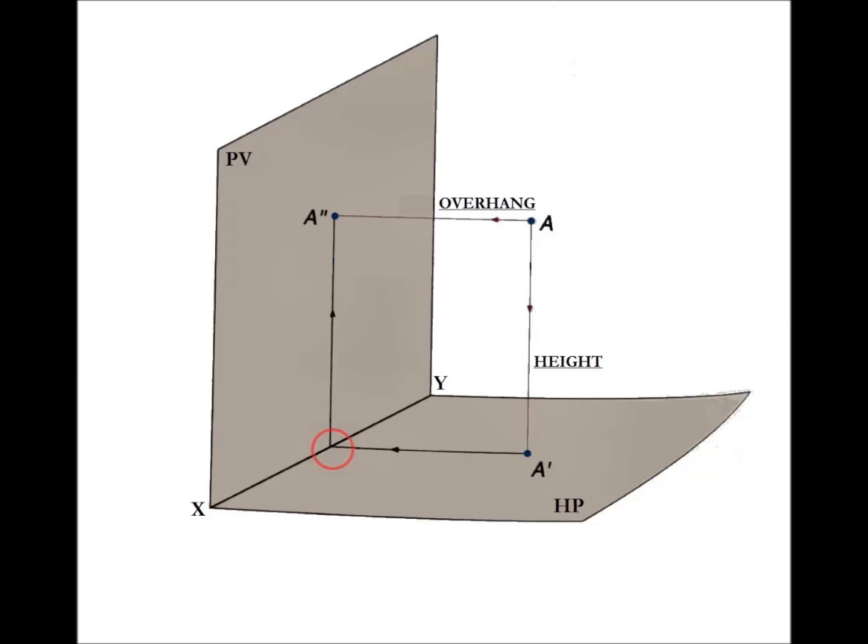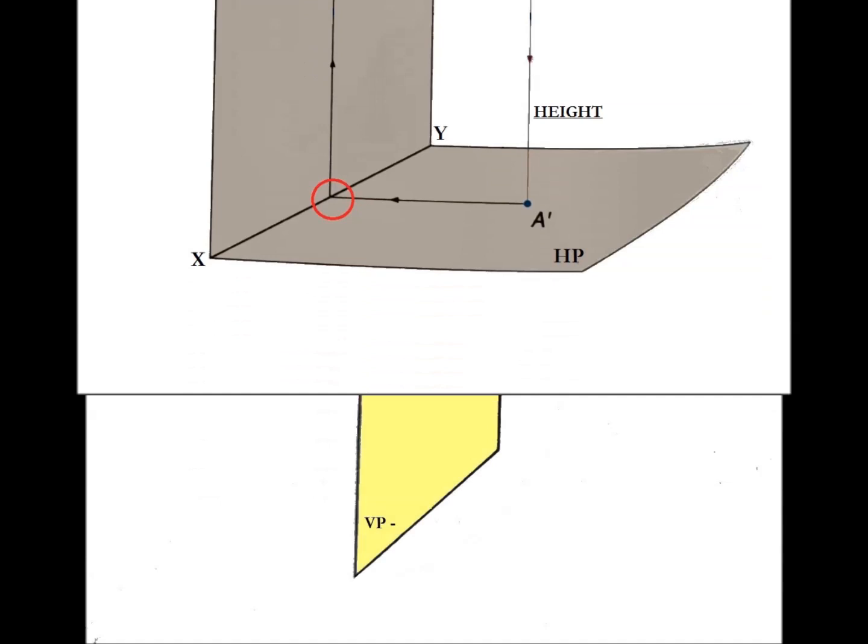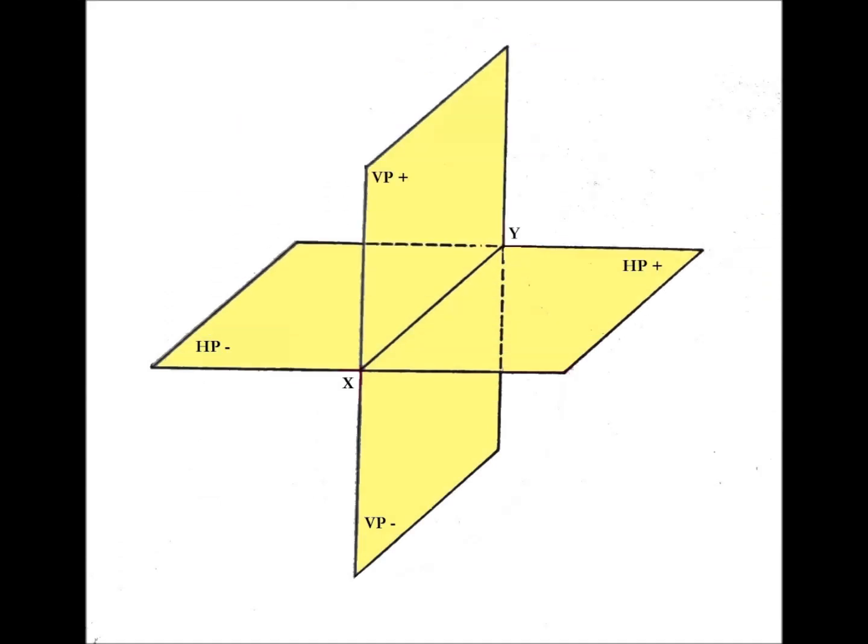As you can see, the reference lines meet on the XY line. The horizontal and vertical planes divide the space into four sections, often called quadrants. These sections are called first, second, third and fourth, counterclockwise.